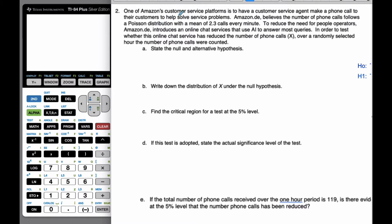So one of Amazon's customer service platforms is to have a customer service agent make a phone call to their customers to help solve service problems. Amazon.de believes the number of phone calls follows a Poisson distribution with a mean of 2.3 calls every minute. To reduce the need for people operators, Amazon.de introduces an online chat service that uses AI to answer most queries.